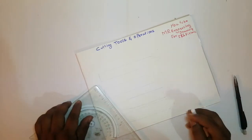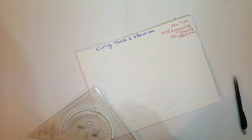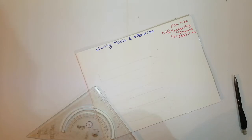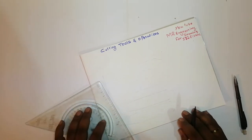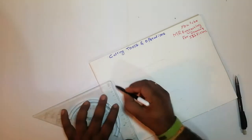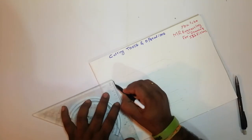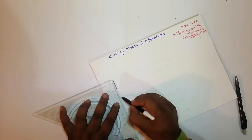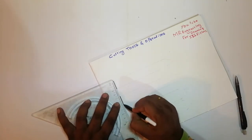Hello friends, how to draw cutting tools and their operations. There are different types of cutting tools: flat file, single cut file, double cut file, raspcap cut file, and curved cut file.